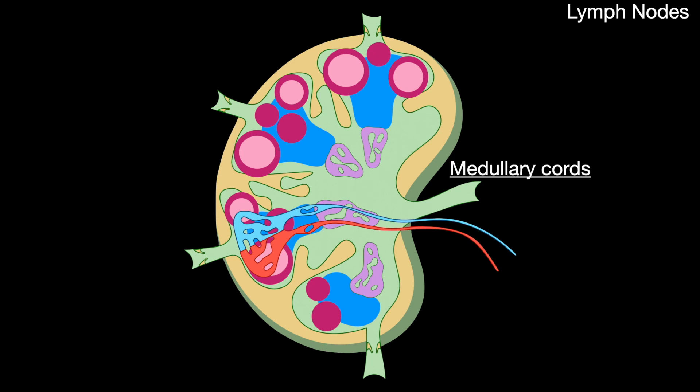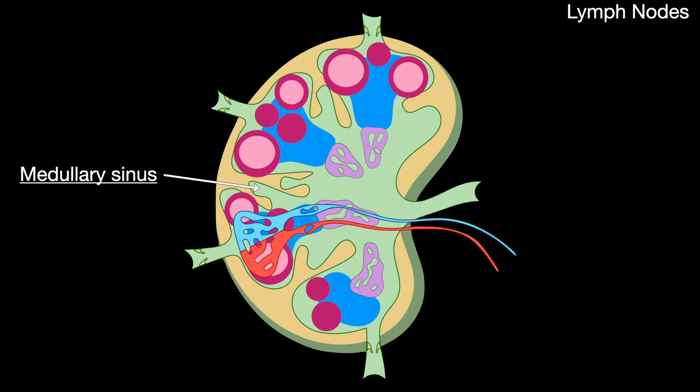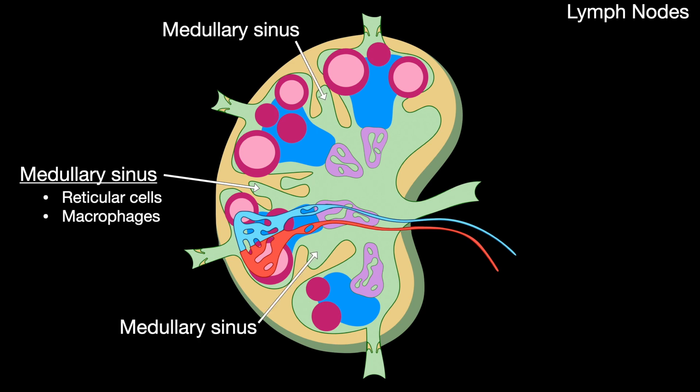The medullary cords contain lymphocytes and plasma cells. The medullary sinus contains reticular cells and macrophages.